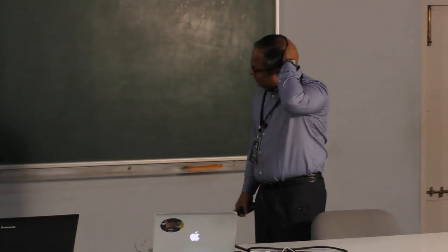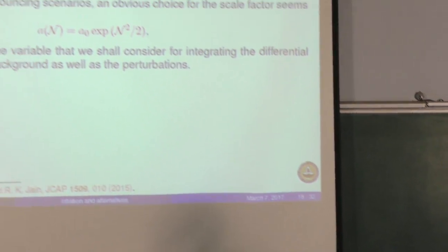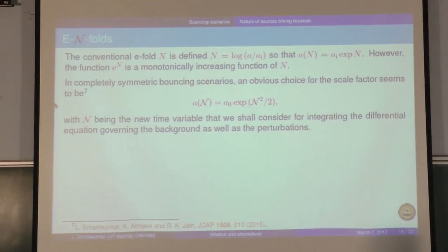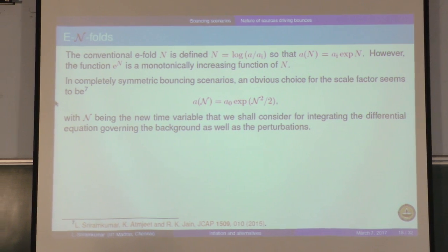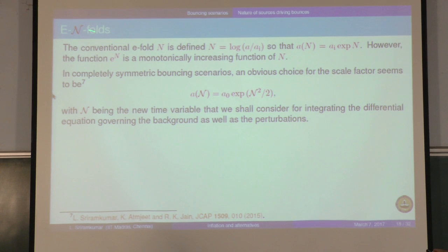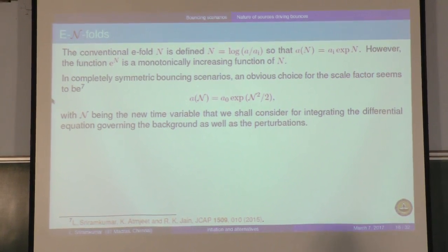In order to understand the graphs I'm going to display, it is useful to introduce a new time variable. In the context of inflation, we introduce the e-fold, which is the logarithm of the scale factor. If you want to numerically evolve perturbations during inflation, you use this e-fold because you need to consider essentially 60 e-folds of inflation. Since e to the power N is a monotonically increasing function, this is not a convenient variable to study the evolution of perturbations in the context of bouncing models. So we introduce something called e-N-folds, which is related to the scale factor in a specific fashion. The figures I'll be plotting will be with respect to this e-N-folds M.